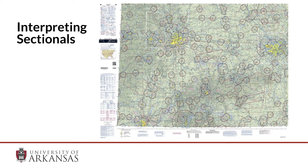Here is the entire Kansas City sectional. There are key legend items, including scales, on the periphery of the sectional. In its totality it is a bit overwhelming, but when we break it down, it is easily understood. Let's dig a little deeper into some of the features.